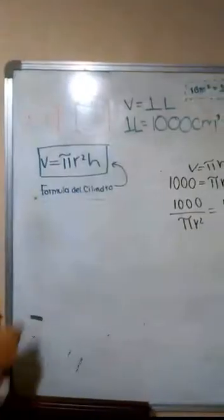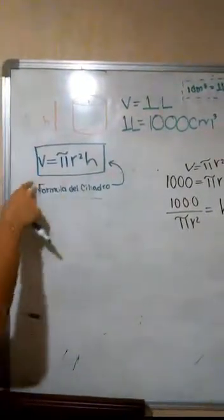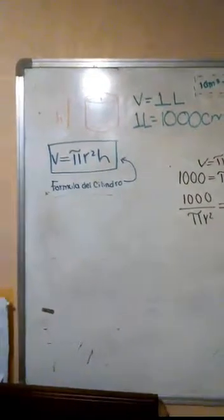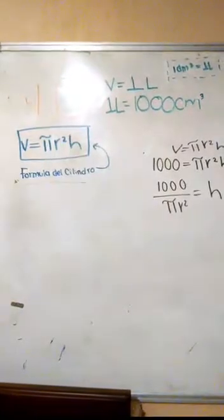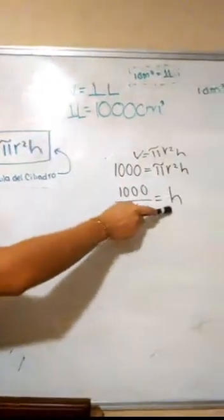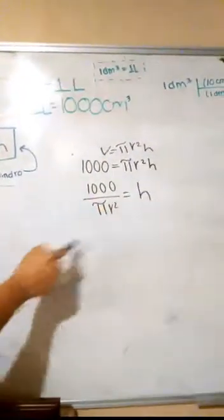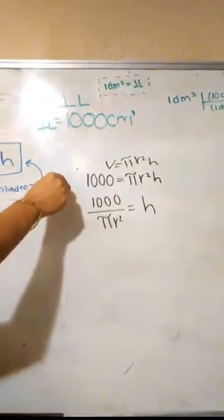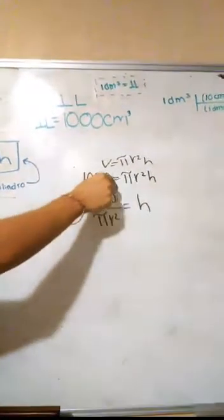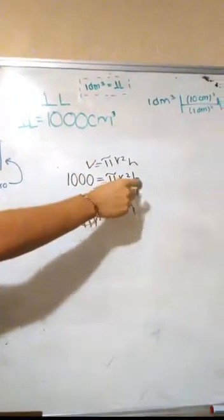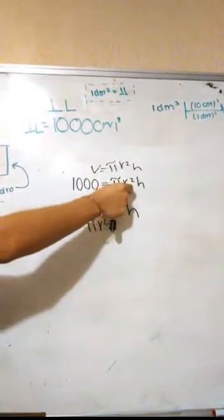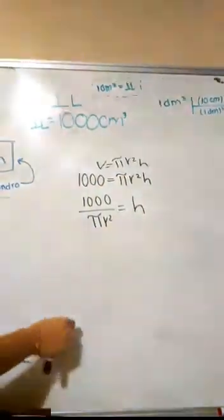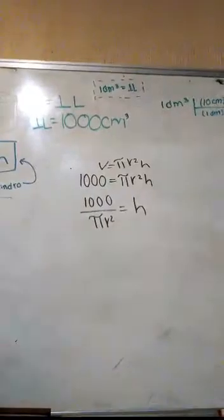Nuestra fórmula del cilindro es volumen es igual a pi por radio al cuadrado por altura. De nuestra fórmula despejaremos la altura que está en función del área. Los 1000 centímetros cúbicos es igual a pi por radio al cuadrado por altura. Esto determina que está multiplicando el pi por radio al cuadrado, lo pasamos dividiendo y queda así.